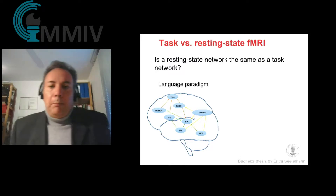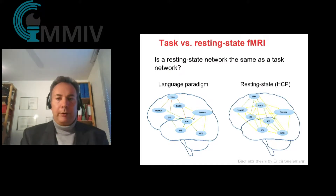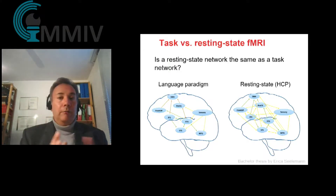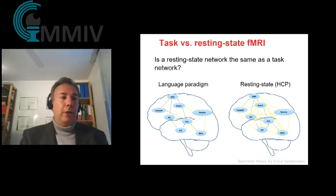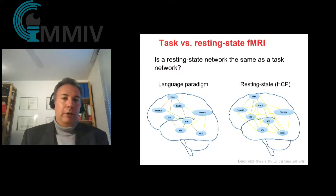However, resting state networks and task activation networks are really different in their configuration. Although globally the networks look similar, if one looks at the connectivity — as displayed here for the language area — there is a very directed flow of information during a task, while during resting state one gets a very heterogeneous pattern of how these brain areas are connected and exchange information. So although the same brain areas appear to be activated, their interaction is apparently very different between doing a task and resting state.